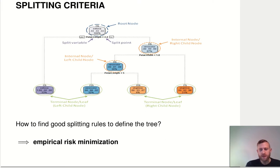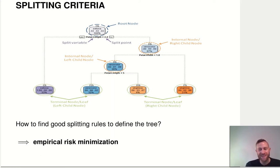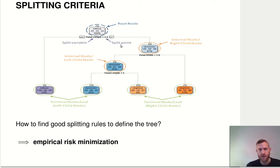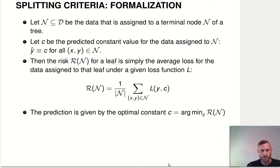The question is: how do you actually build that tree? How do you learn the best possible structure? The answer, as almost always, is empirical risk minimization. That's how we find how to define these splits — which variable and which value of that feature to use to define a split. Empirical risk minimization is the answer.